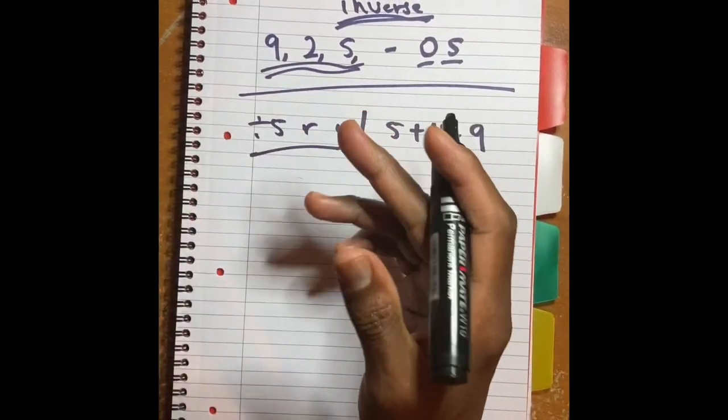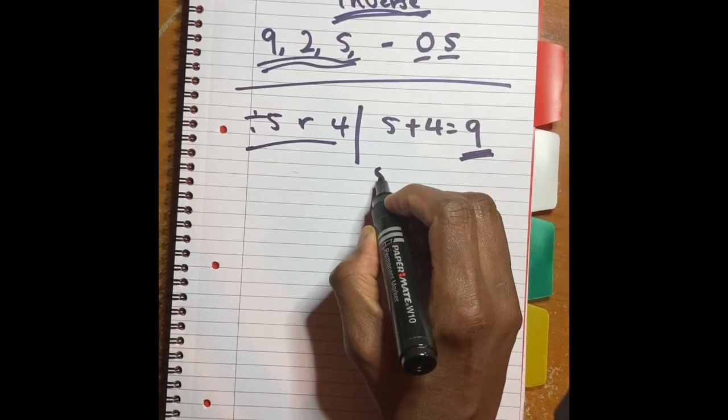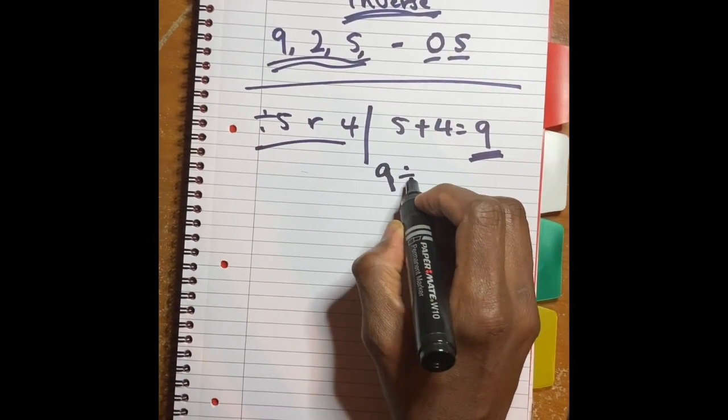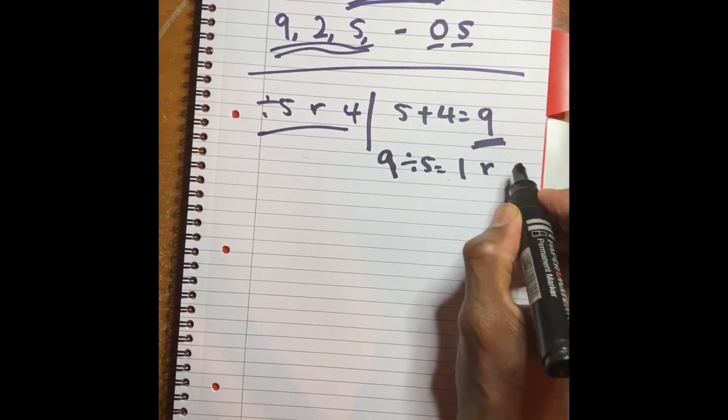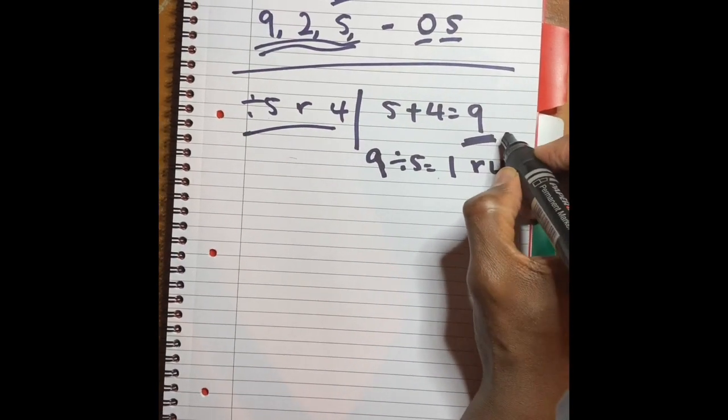So if I say nine divided by five, your answer is one remainder four. So just by using this, you got the right answer.